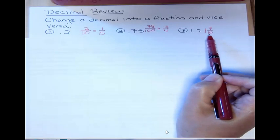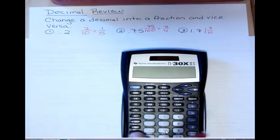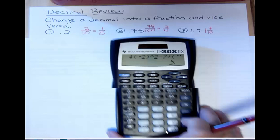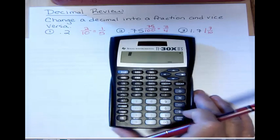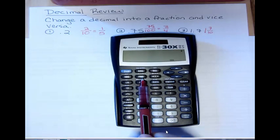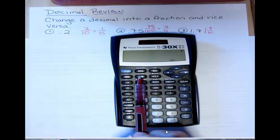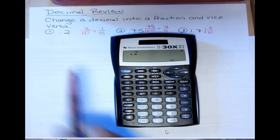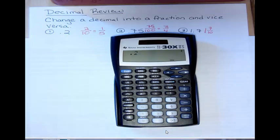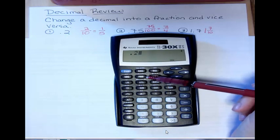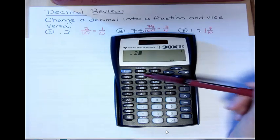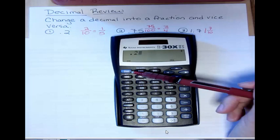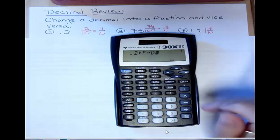Now if you have a calculator, the TI calculators, you can change decimals into fractions. Do you see the button up here that says PRB? And just above that, kind of hard to see on the video, is a button that says F to D. So if I was to put in 0.2, like we had for our first example, and then I want the button that's above the button, I want the directions F to D. I'm going to hit second function, that's that second button, and then that.